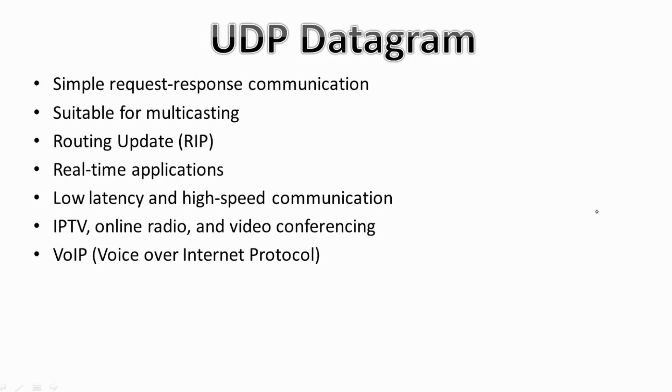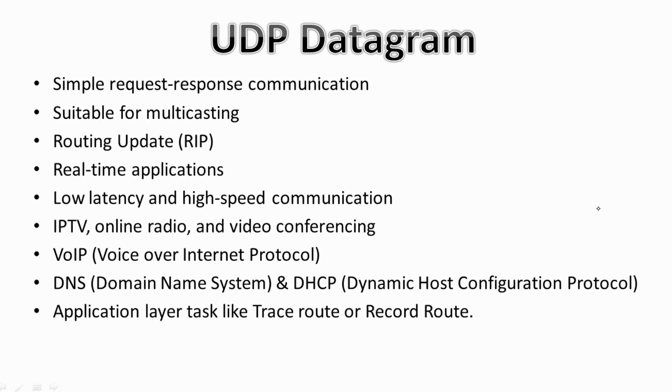UDP is also used by DNS and DHCP. In DNS, it uses UDP for query and response messages. In DHCP, it is used for dynamic IP assignment to devices on a network.